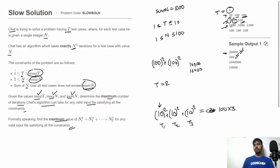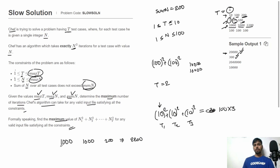In the third test case, max test cases is 1000, max_N is also 1000, and sum_N is 2200. We give N=1000 the first time, N=1000 the second time, and N=200 the third time. The sum is 2200 and there are 3 test cases (T1, T2, T3). The maximum iterations = 1000² + 1000² + 200².